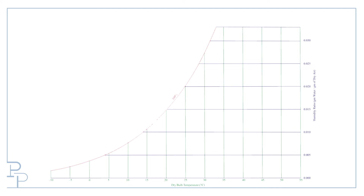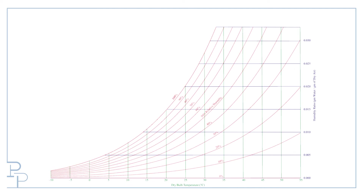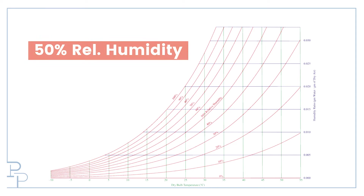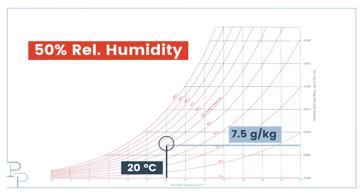If we take each vertical portion and divide it up equally, we can get various curves showing different percentages for various relative humidities. So air that has a relative humidity of 50% at 20 degrees has about 7.5 grams of water per kilogram of dry air.